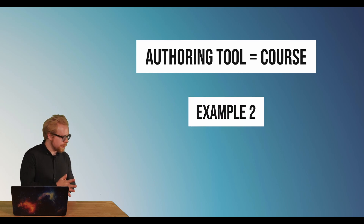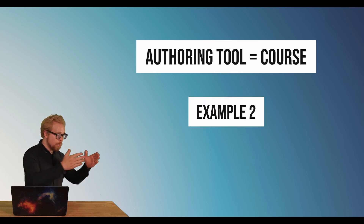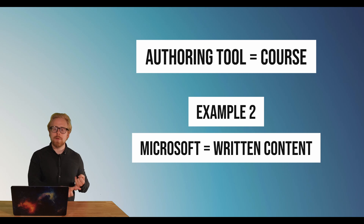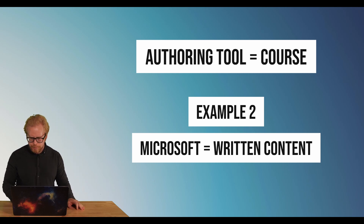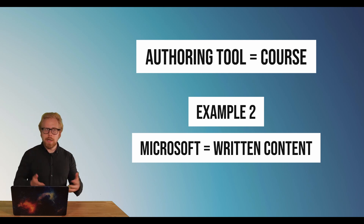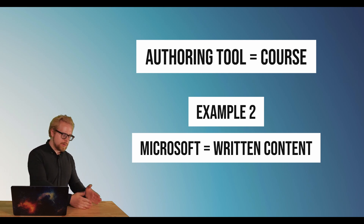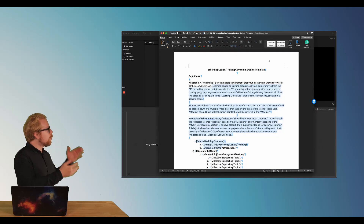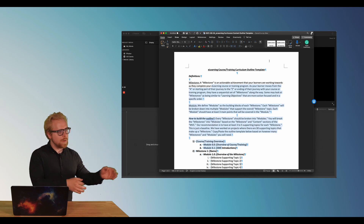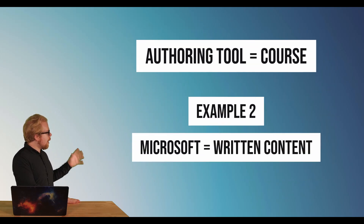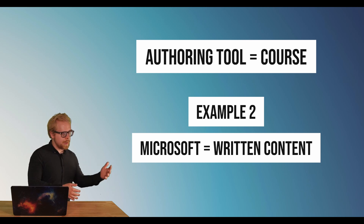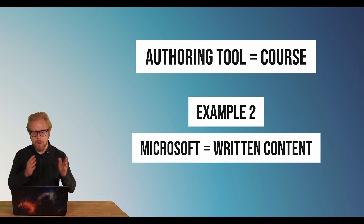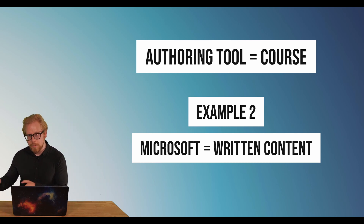So example number two is a word processor like Microsoft Word, Pages, or Google Docs. Those are tools for you to create written content. A word processor is to written content just like an authoring tool is to creating a course. You author written content, you author the course.